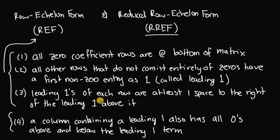The third rule is that leading ones of each row are at least one space to the right of the leading one term above it. So if a row has a leading one, the leading one in the row below must be at least one column to the right of the leading one in the row above.